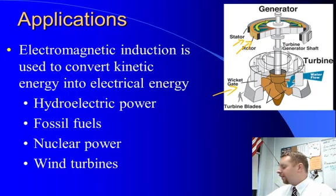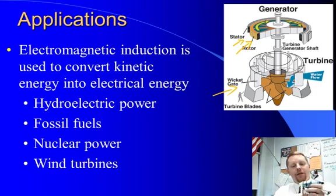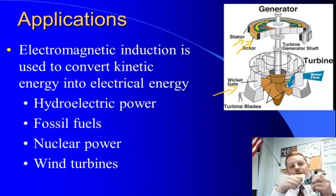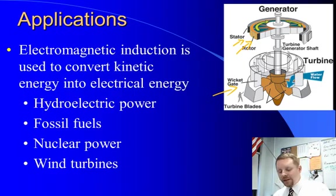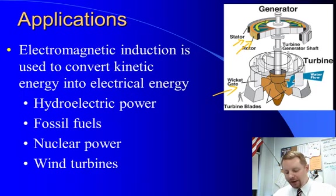We can even demonstrate this here in the classroom. Here is a very simple electrical generator known as a dynamo. We have a coil of wire and magnets, and by spinning one relative to the other, we can light up a little light bulb right beside it. The faster we spin it, the brighter the light gets — the more potential difference we are able to create. This is a direct application of electromagnetic induction.